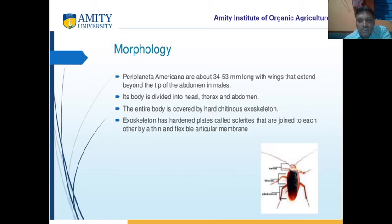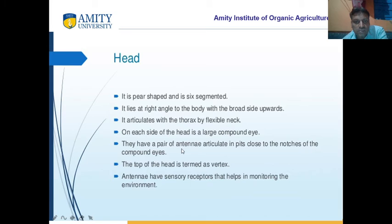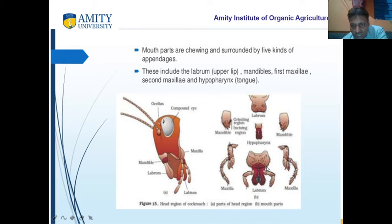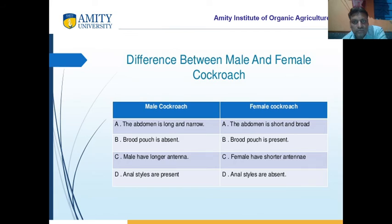They are divided into head, thorax and abdomen. The entire body is chitinous — made up of chitin. The head is six-segmented, like grasshoppers. You can see the mouth parts: labrum (upper lip), labium (lower lip), hypopharynx (tongue), mandibles, and maxilla.